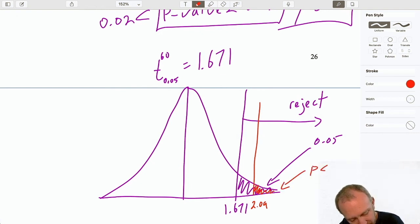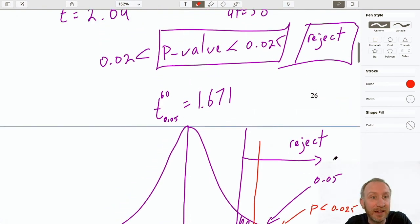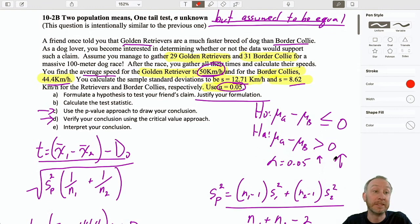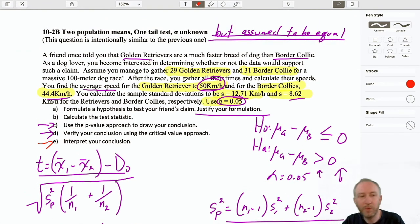And, certainly, that p-value is less than alpha. So, we get consistent results, which is really what we had better get. Both of these approaches lead us to reject, which means, finally, we do have evidence to support our friend's claim. Our evidence supports the alternative hypothesis. We have sufficient evidence here to show that, on average, the speed of a Golden Retriever is greater than the speed of a Border Collie.